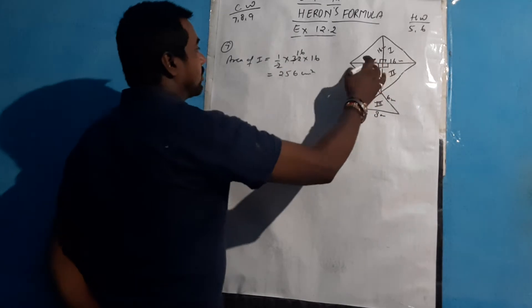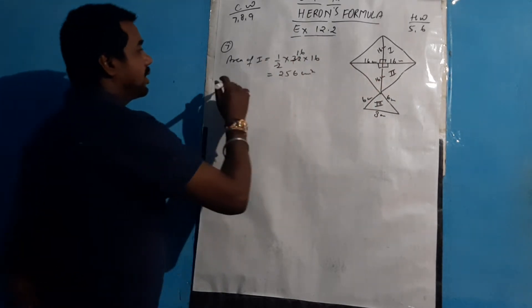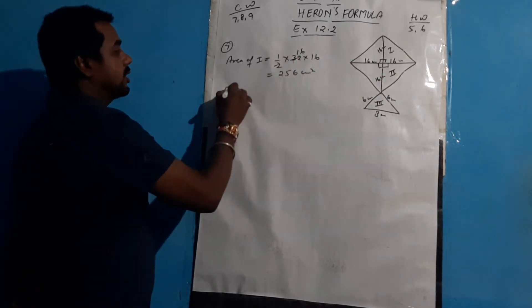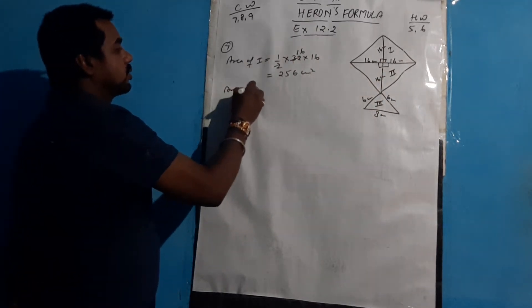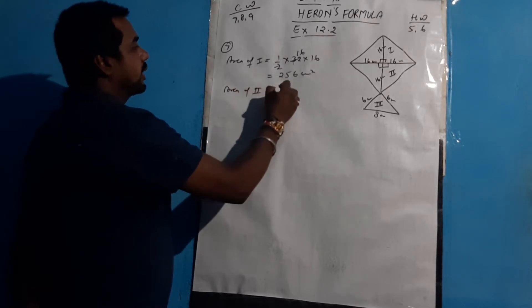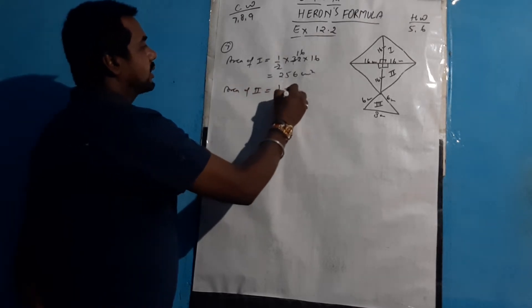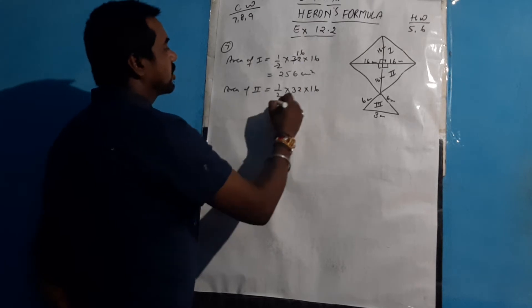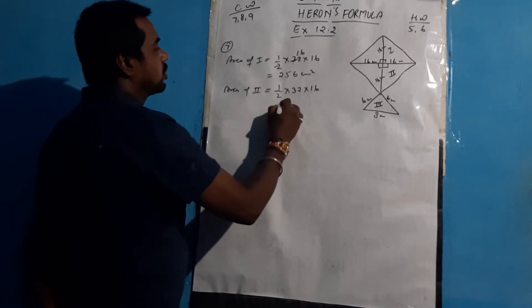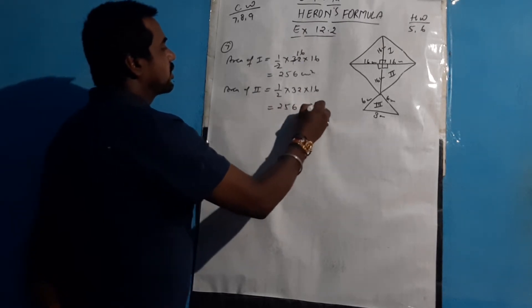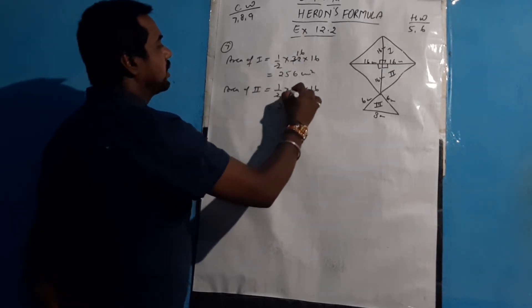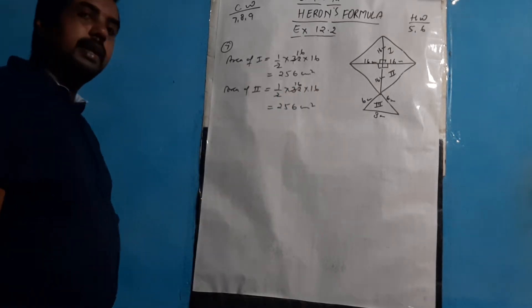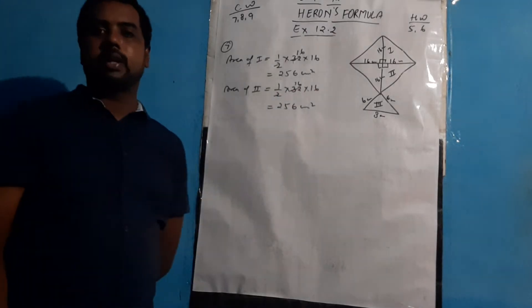In the same way, for the second part, the base is also 32 and the height is 16. So area of second part = half × 32 × 16 = 256 cm². Therefore, the area of the first part and the area of the second part are both 256 cm².